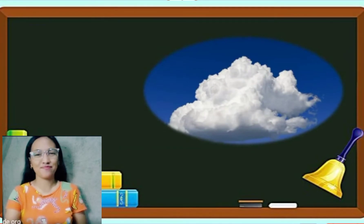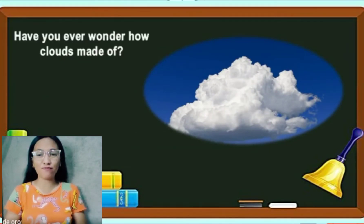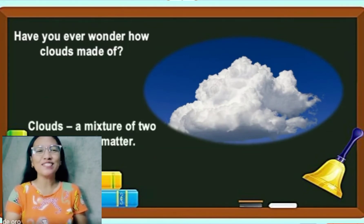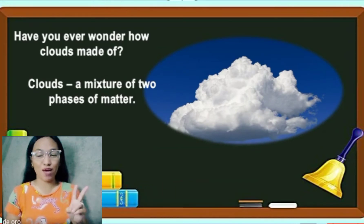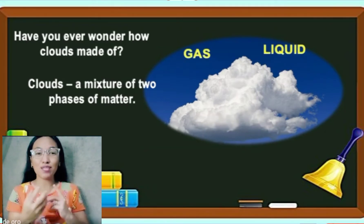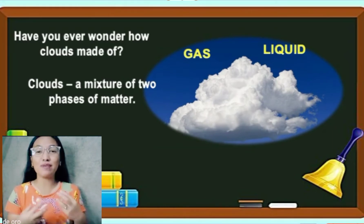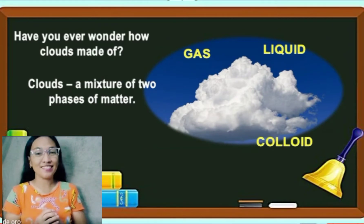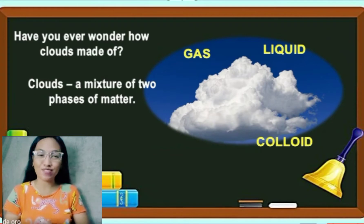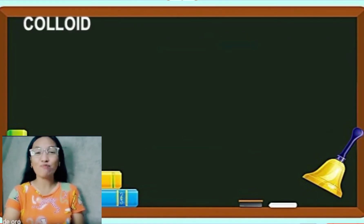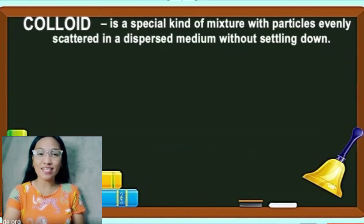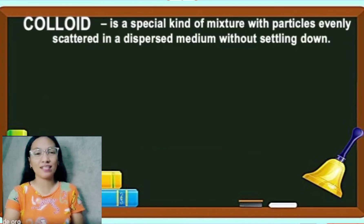Have you ever wondered how clouds are made? Clouds are also a mixture — a mixture of two phases of matter. We have gas and liquid, and when these two phases of matter mix together, they form a colloid. Clouds are an example of colloid. Our lesson for today is colloid. A colloid is a special kind of mixture with particles evenly scattered in a dispersed medium without settling down.